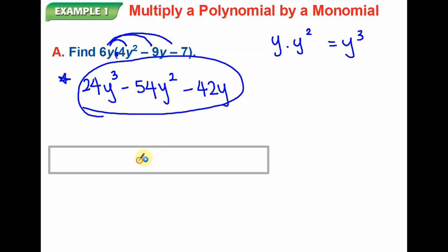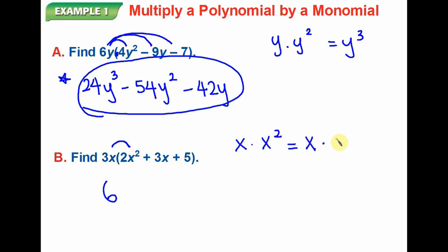One more example, part B. 3x times 2x squared. So you are still distributing, and 3 times 2, I will get 6. x times x squared, if I explain one more time, x times x squared is the same as when you are multiplying x times x squared, so x multiplied twice. I will get a result of x cubed. So x cubed right here.